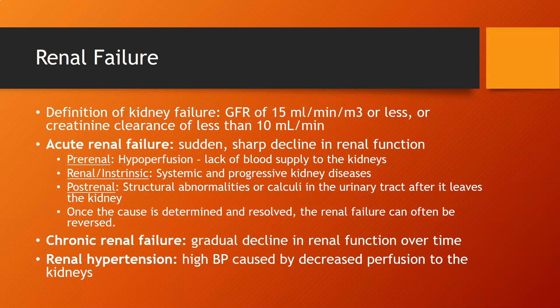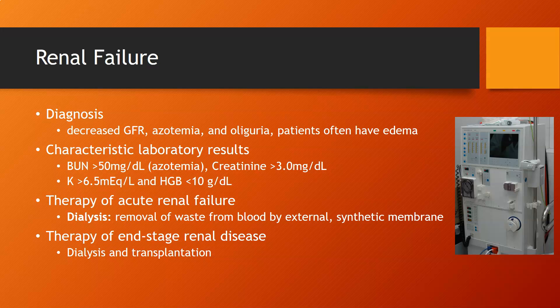Chronic renal failure is a gradual decline in renal function over time, usually associated with hypertension and diabetes mellitus. Renal hypertension is high blood pressure caused by decreased perfusion to the kidneys — for example, plaque or calcifications in the arteries leading to the kidneys. The diagnosis of renal failure involves a decreased glomerular filtration rate, azotemia (increased BUN and creatinine), oliguria, and edema.